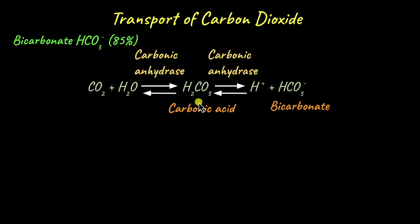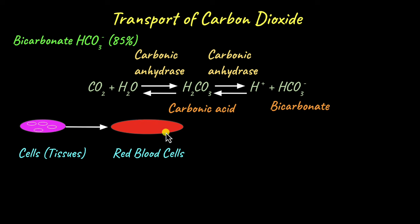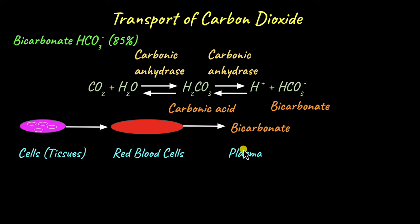Carbonic acid dissociates into protons and its conjugate base, the bicarbonate ion. This entire reaction takes place mostly within the red blood cells compared to the plasma, because a higher concentration of carbonic anhydrase is present inside the red blood cells. Carbon dioxide diffuses out of the cells and tissues into the red blood cells due to the difference in partial pressure. Within the red blood cells, carbon dioxide is converted to protons and bicarbonate ions. The H⁺ ions stay inside the red blood cells bound to hemoglobin, but the bicarbonate ions diffuse out of the red blood cells into the blood plasma and are transported to the lungs.